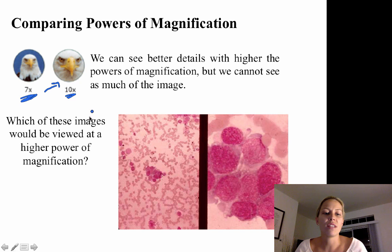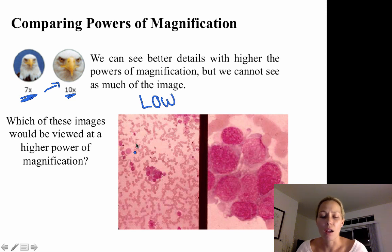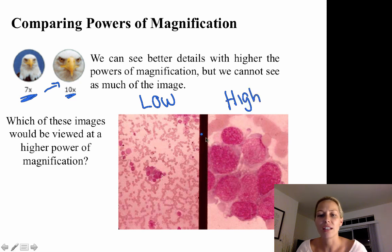Which of these images would be viewed at a high power of magnification? The image showing a whole lot of bacteria would be viewed under low power. The other image would be viewed under high power because you are seeing less of the overall image and zooming in on a specific portion.